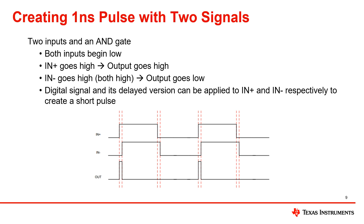An alternate way to create a 1 nanosecond pulse is by using two input signals. For this to work, one of the signals will have to be delayed — in this case, it is the N-minus signal. For reference, the output will follow the N-plus signal when N-minus is low. When looking at the timing diagram, we see that N-plus goes high first, which will cause the output to go high as well. Then, when the N-minus signal goes high, the output will go low. The delay between the two input signals going high, as shown by the red dotted lines, will be the time that the output is high. Therefore, if the delay between the two signals going high is 1 nanosecond, then the output will be high for 1 nanosecond. This could then be done repeatedly to generate multiple 1 nanosecond pulses.